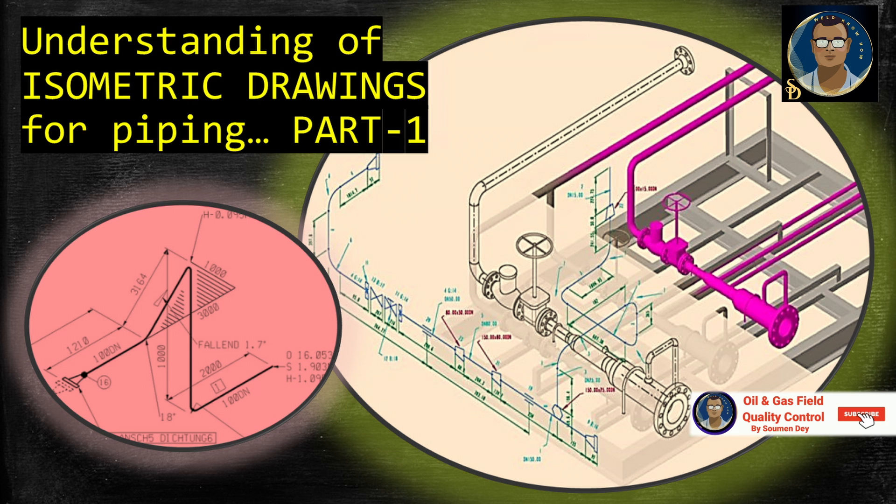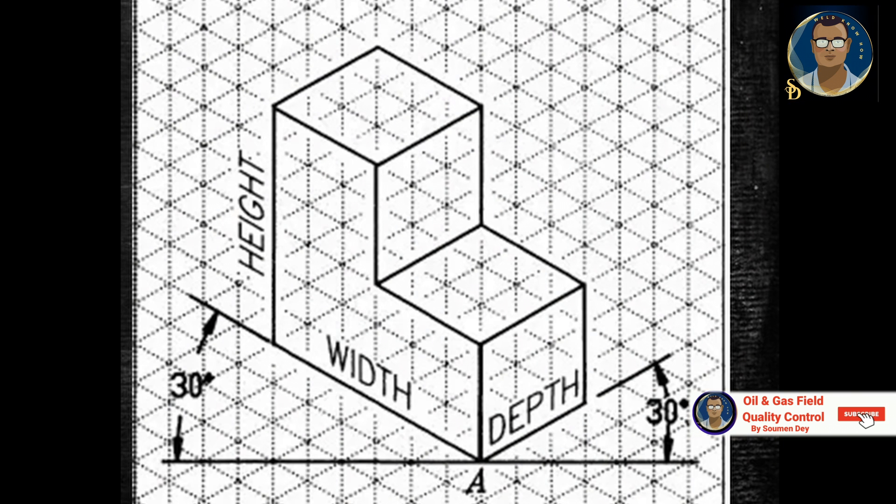The most popular drawing for piping for easy representation is isometric drawings. Let us have some insight for isometric drawing: what is piping isometric drawing and how to read piping isometric drawing. This will be our basic topic in this part.